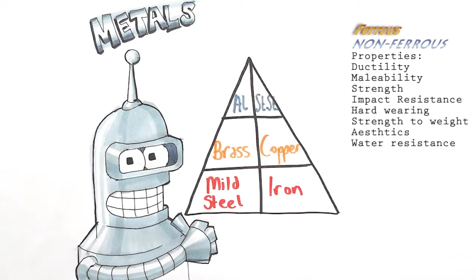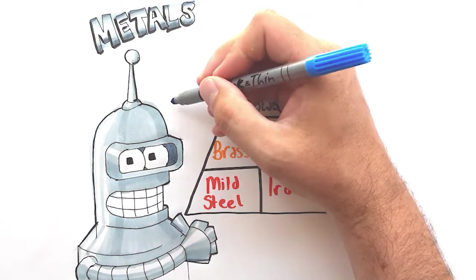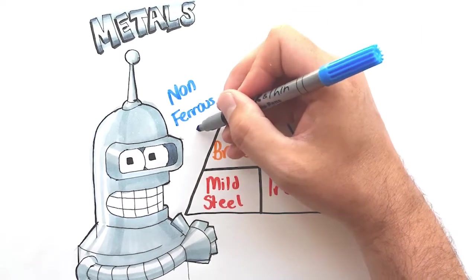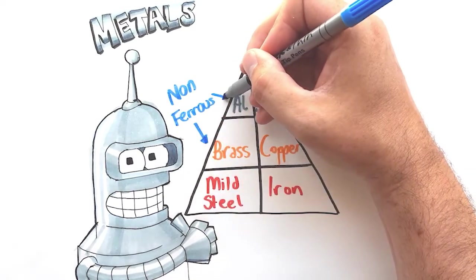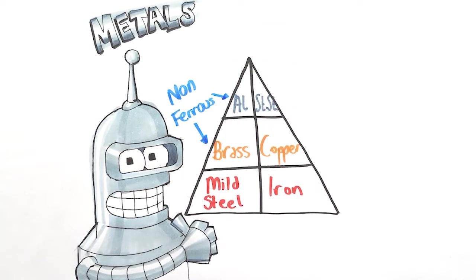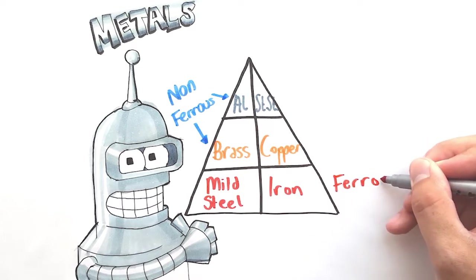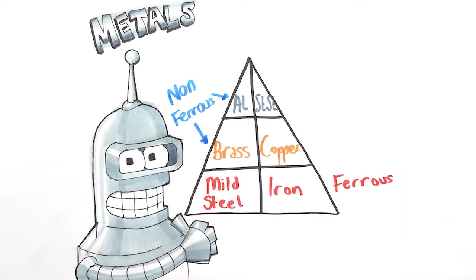And then finally some of the materials are better from a water resistance point of view. The non-ferrous metals will be able to deal with water contact much better than the ferrous metals. Ferrous metals contain iron which means that the metals themselves rust.